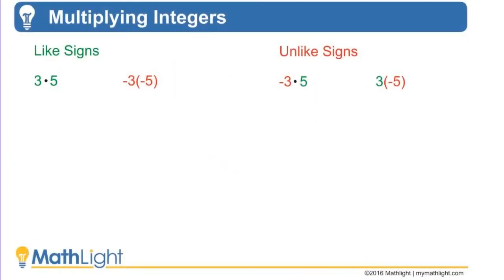All right, quick review. Multiplying integers is really easy. Just got to remember the proper signs. Our first examples here, two examples on the left, are when you're multiplying like signs: positive times a positive or negative times a negative.